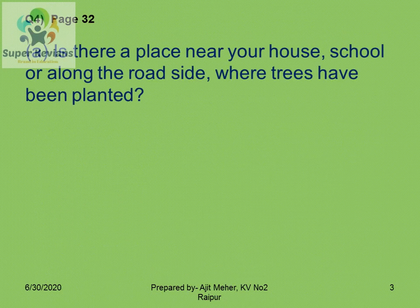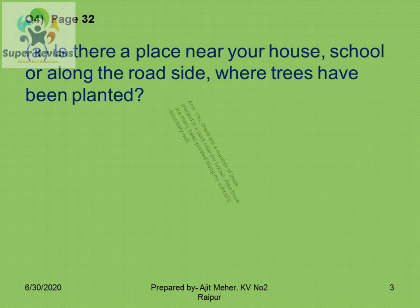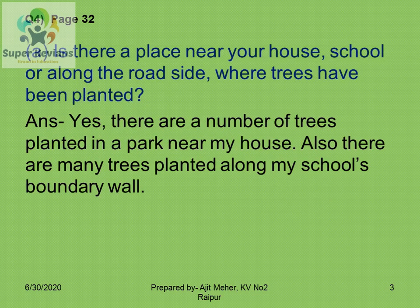The next question is on page number 32: is there a place near your house, school, or along the roadside where trees have been planted? This question is open to everyone — your answer may be different. Here I am saying about my own house. Yes, there are a number of trees planted in a park near my house. Also, there are many trees planted along my school's boundary wall. You have to write the answer as per the location of your own house.